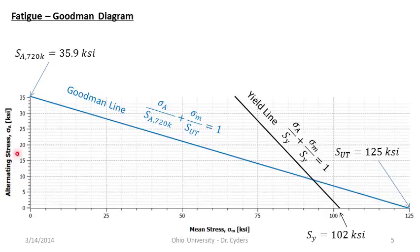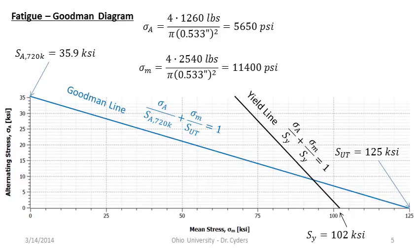How do we calculate our distance from the envelope? We originally determined factor of safety by the relative distance: from the origin to the operating point that would cause failure, divided by the distance from the origin to where we're actually operating. In this case we had an alternating stress of 5,650 psi and a mean stress of 11,400 psi.